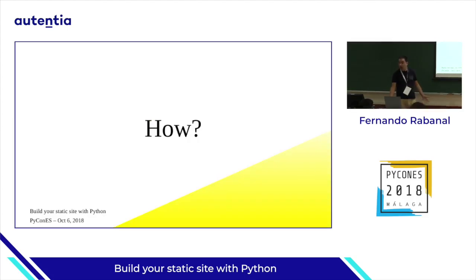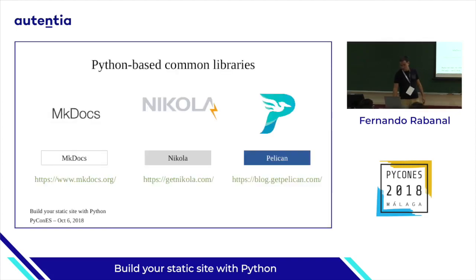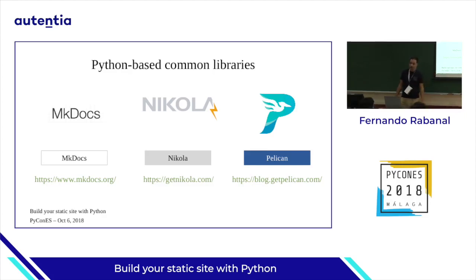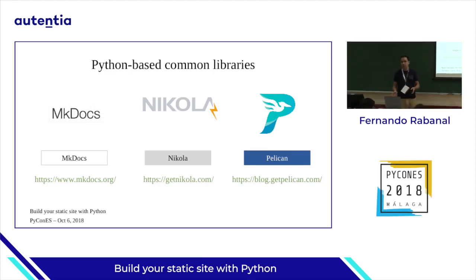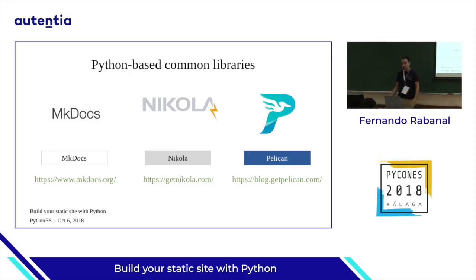So, how do we do this? Which are the libraries? For Python, we'll be using MkDocs — I'm sure some of you at least know this library. This is used for when you have a project and you have the documentation of the project, and you want to visualize it as a web page. So maybe MkDocs is the best option. It's quite simple. It renders all the documentation you may have in Markdown, simple and plain — you have it all available.